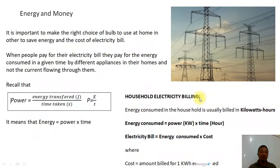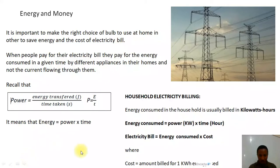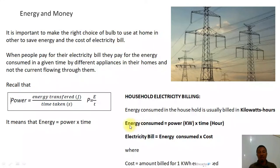In household billing, energy consumed is usually billed not in watt-seconds but in kilowatt-hours. That means power will be converted to kilowatts and time will be measured in hours rather than seconds. So energy consumed in the household is power in kilowatts times time in hours. To calculate the electricity bill, multiply the energy consumed by the cost, where the cost is the amount billed per one kilowatt-hour.